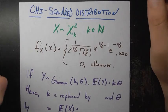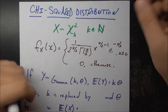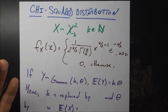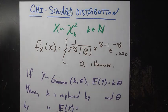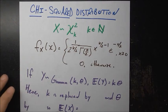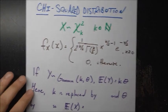In this video, we'll be talking about the chi-squared distribution, which has a very close relationship to the normal distribution, which we'll talk about after we discuss the properties of the chi-squared distribution.